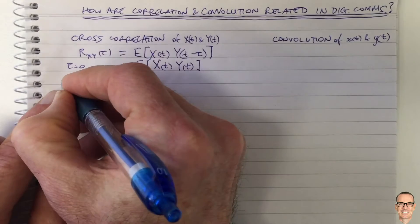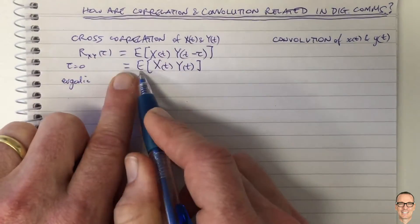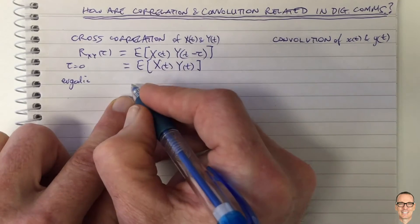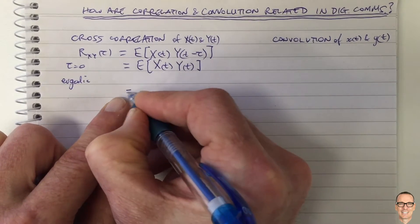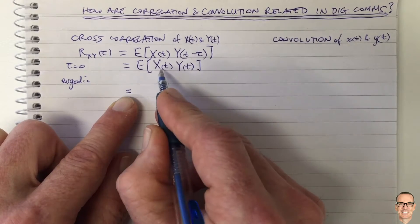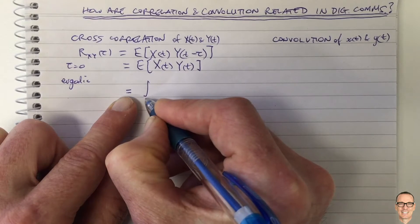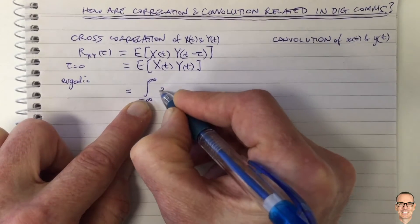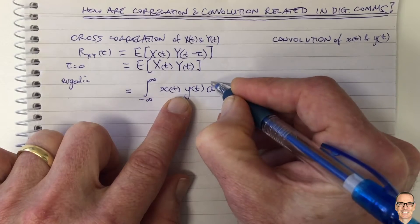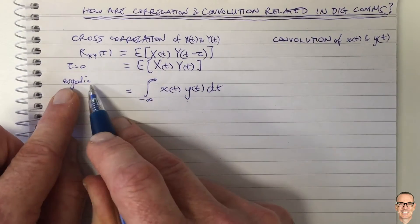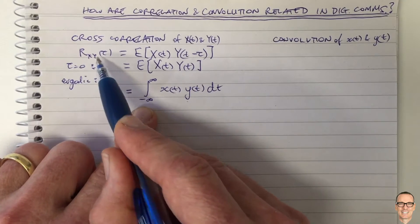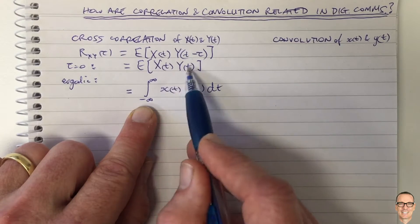If our system is ergodic, then we can replace ensemble averages with time averages — for more details, see videos on ergodic processes. What this means is we can replace this average, which is an integral over the possible outcomes of these random variables, with a time average: we take one realization of X and one realization of Y, multiply them together, and integrate over time from minus infinity to infinity. So if tau equals 0 and the system is ergodic, we get this expression for cross-correlation where we simply multiply two realizations of the random processes.